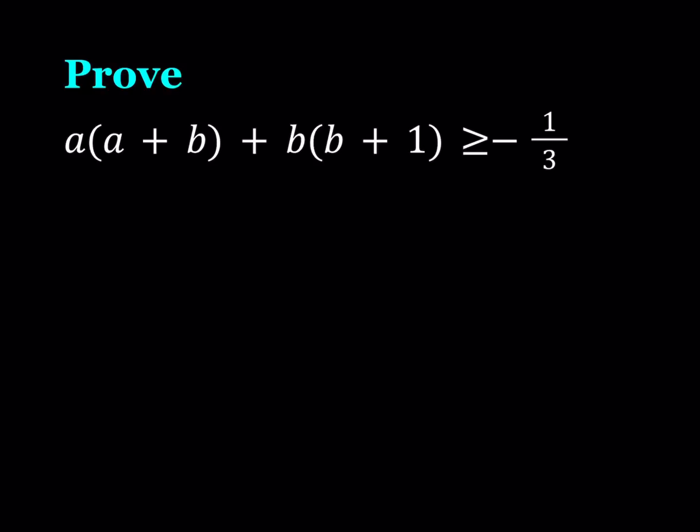So we have the quantity a times a plus b plus b times the quantity b plus 1, and we're trying to prove that this is greater than or equal to negative one third. So first of all, I would like to